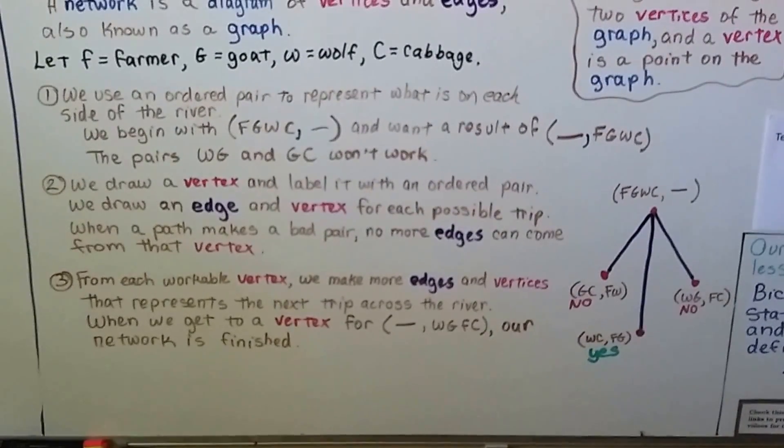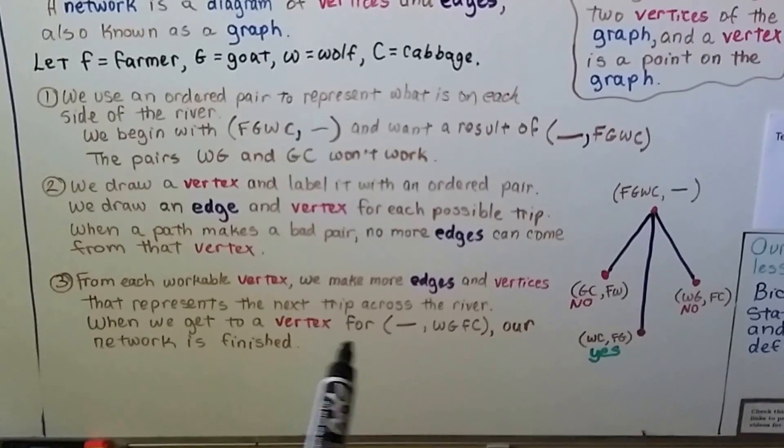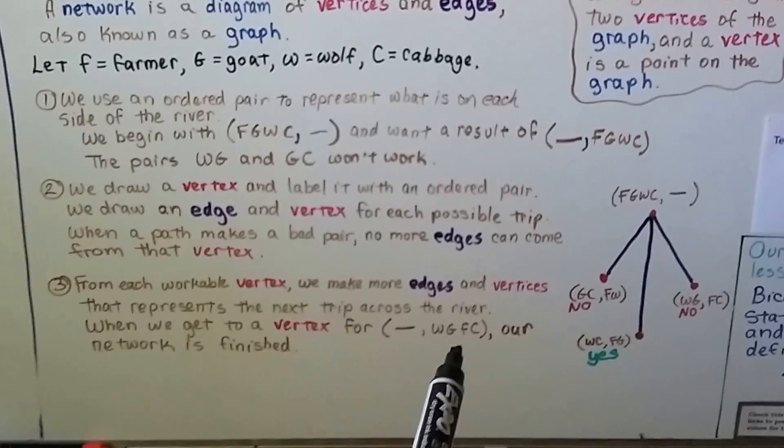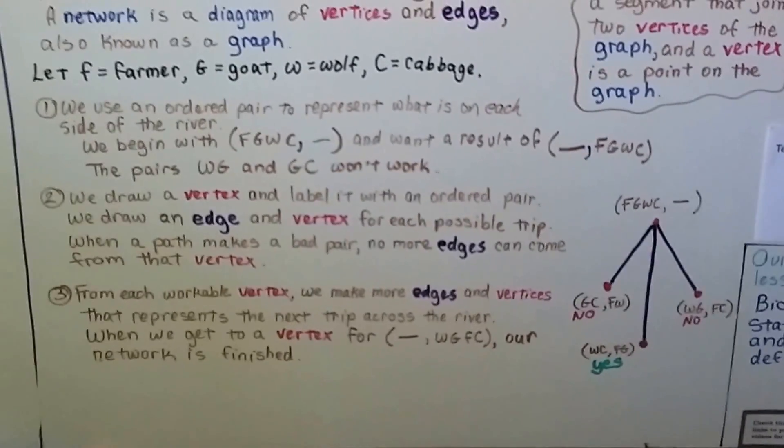From each workable vertex, we make more edges and more vertices that represents the next trip across the river. When we get to a vertex for nothing on the left and all of them on the right, our network is finished. So this sounds really confusing, let's take a look at what this looks like.